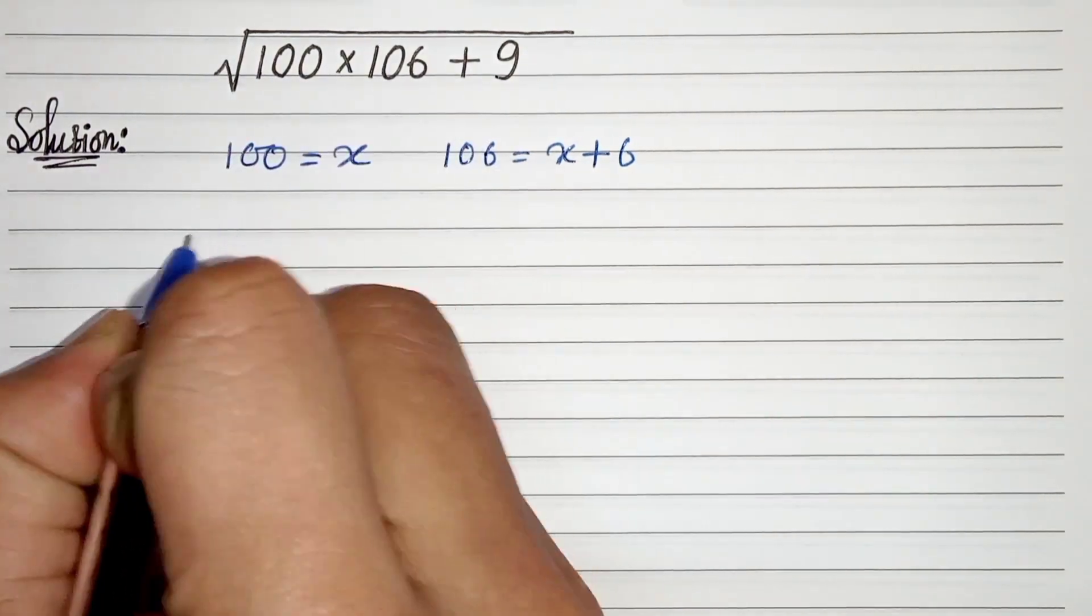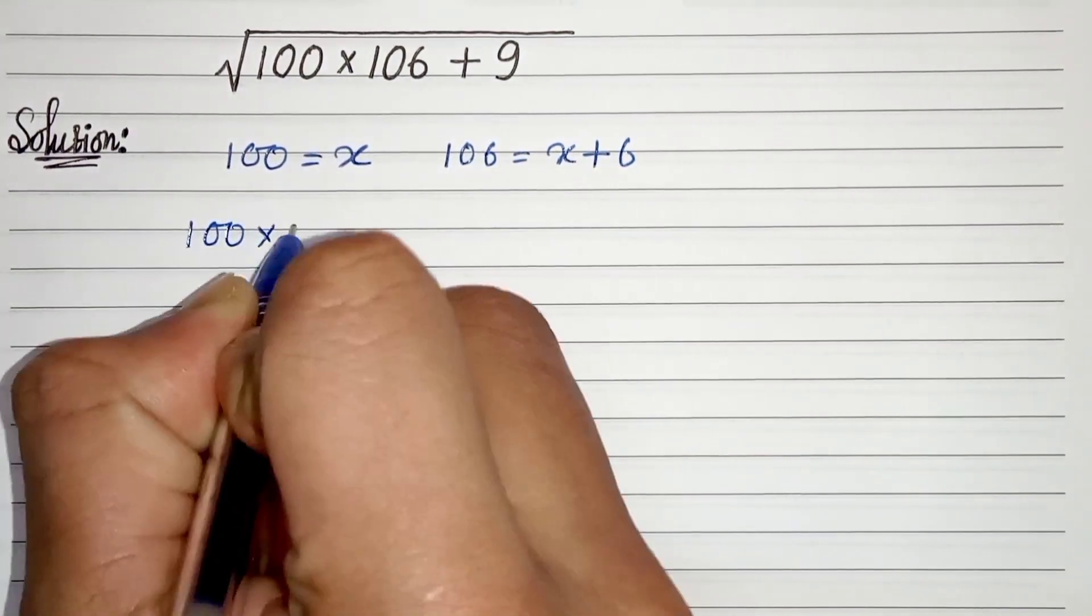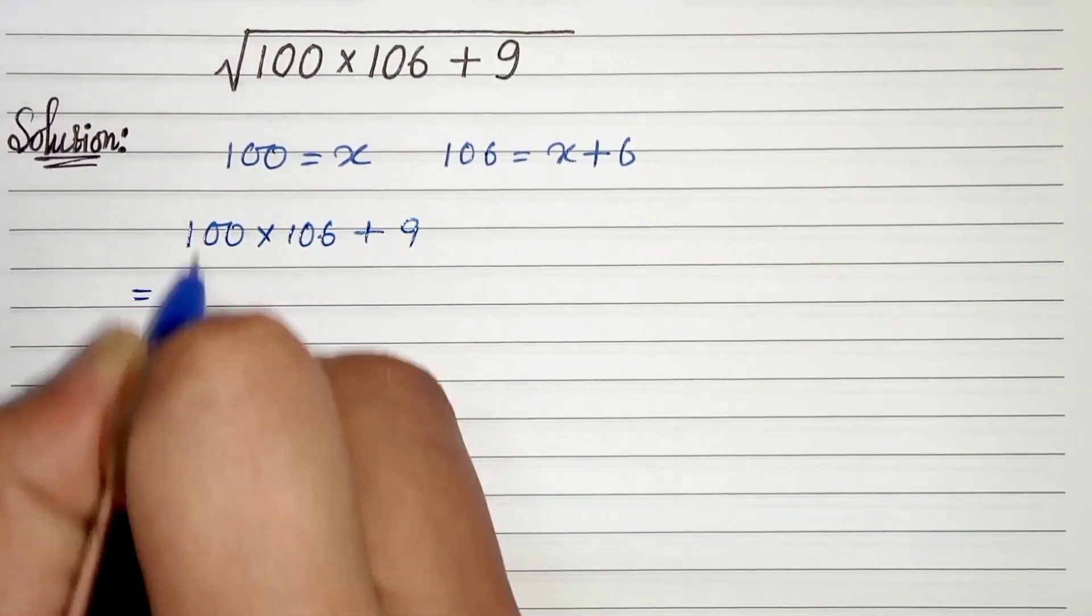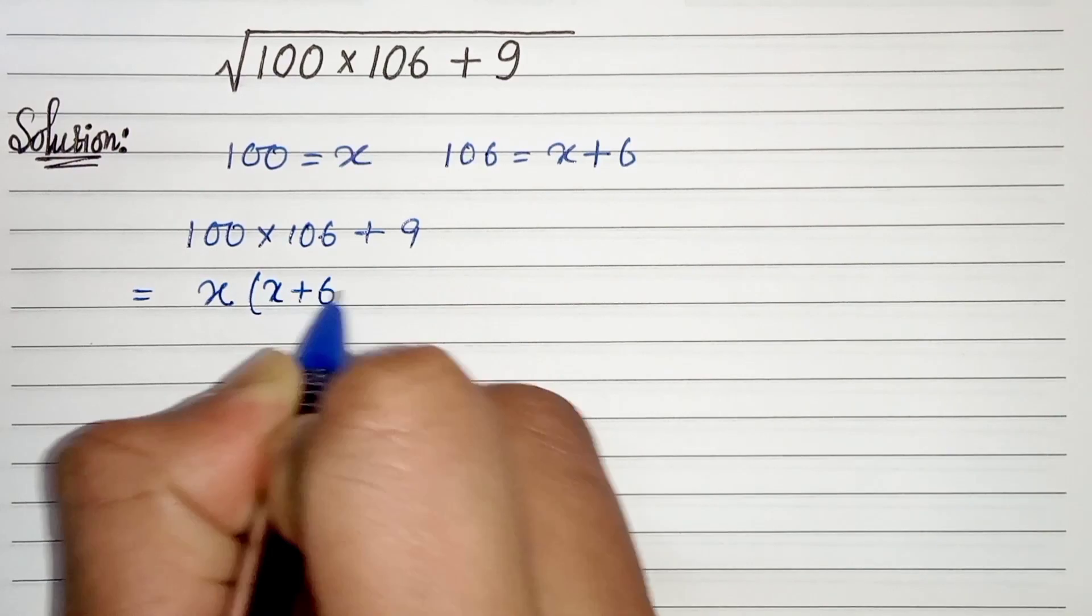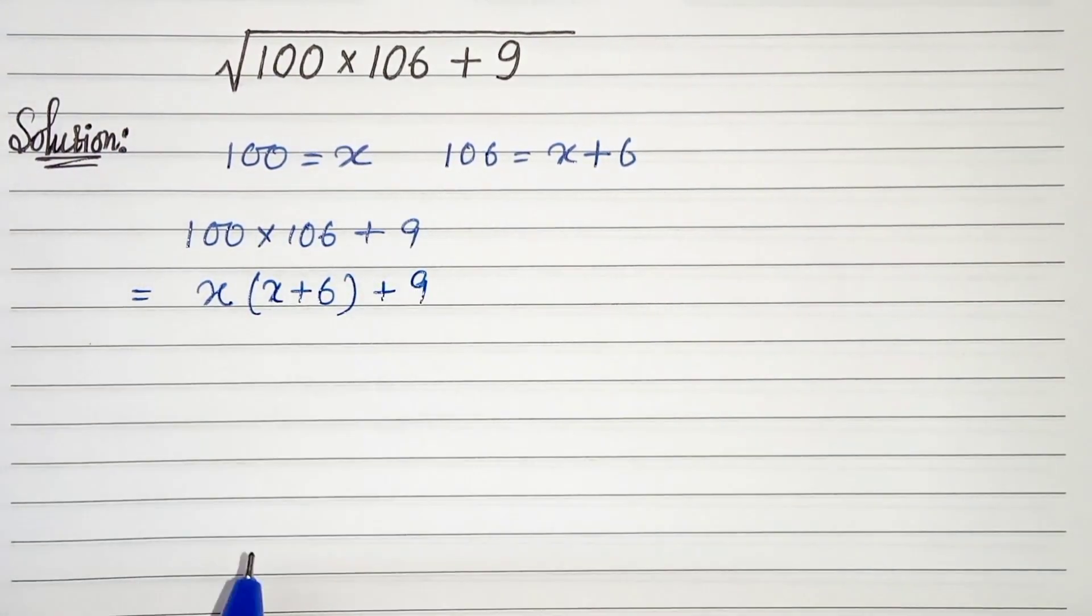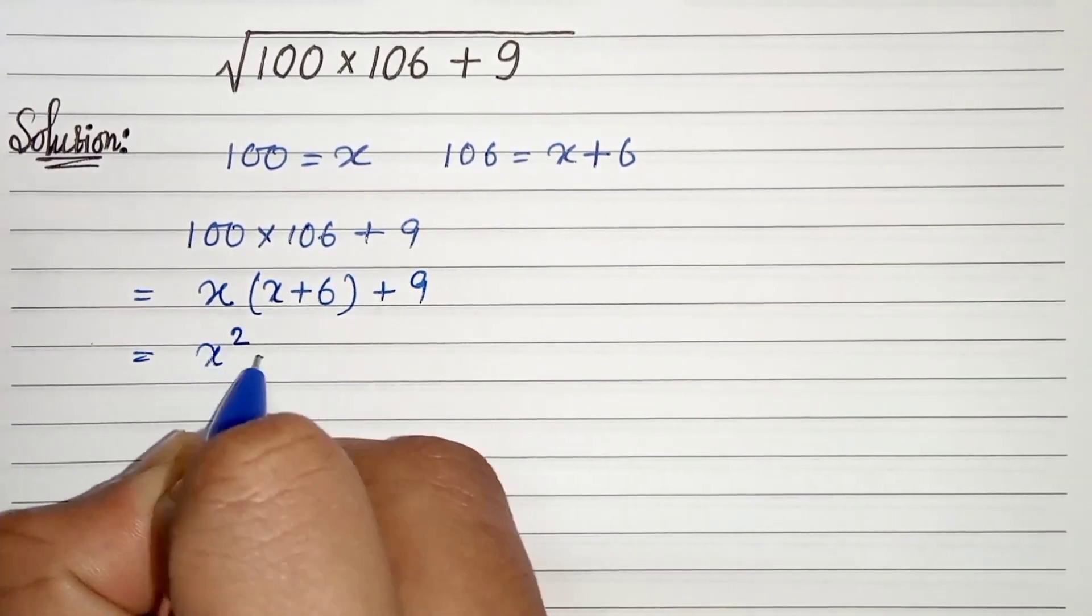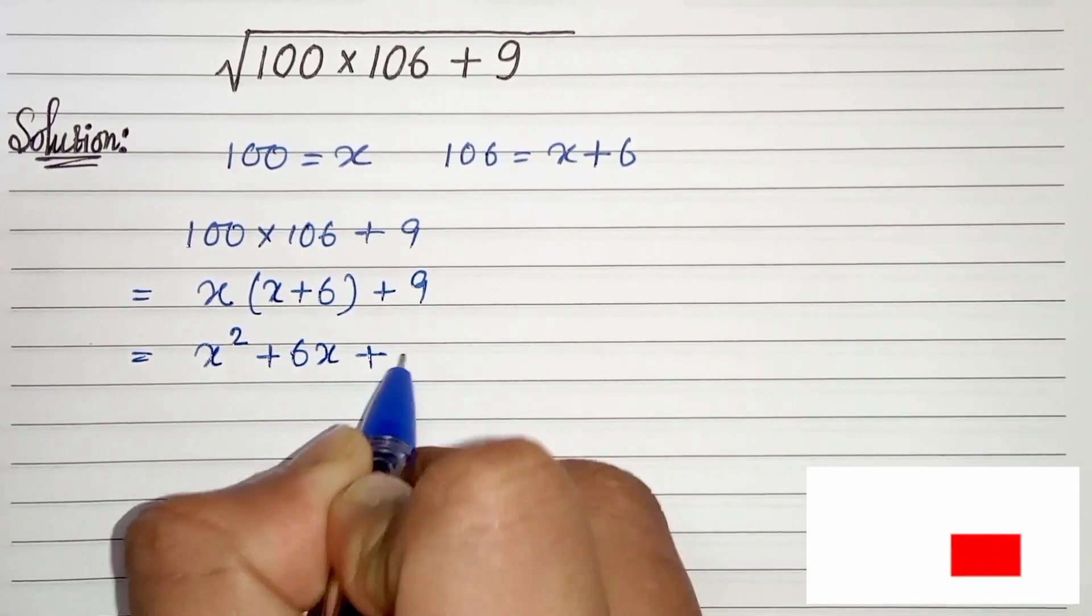So we can write 100 times 106 plus 9 as x times (x plus 6) plus 9. Then we can write x squared plus 6x plus 9.